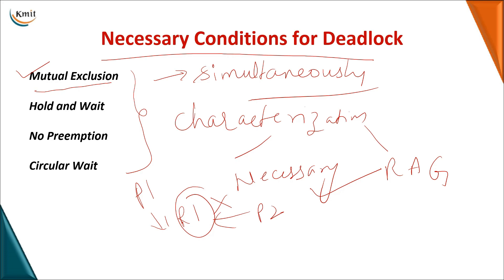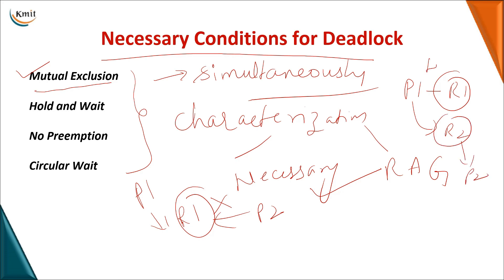The second condition is hold and wait. One process holds a resource — say R1 — and waits for another resource R2, which is held by some other process. So it is holding R1 and waiting for R2, and this situation can lead to a deadlock.